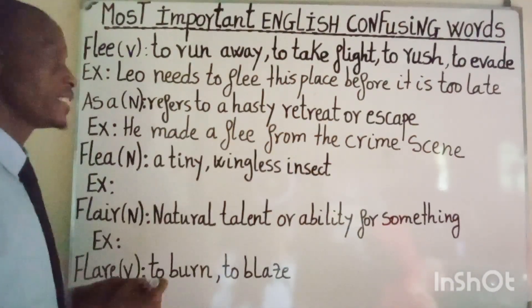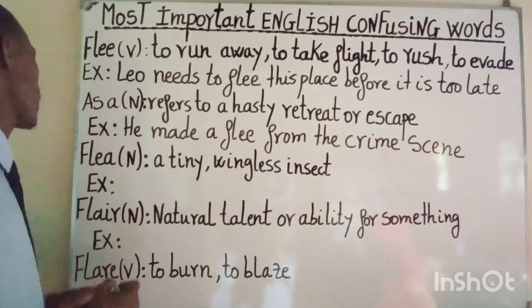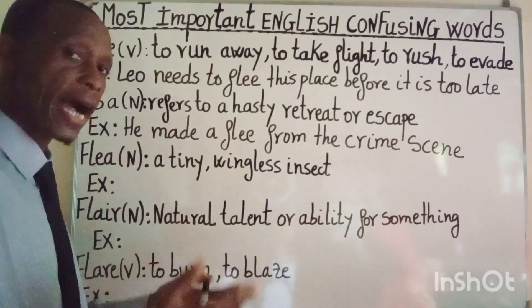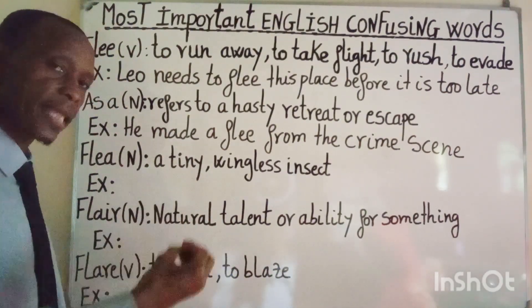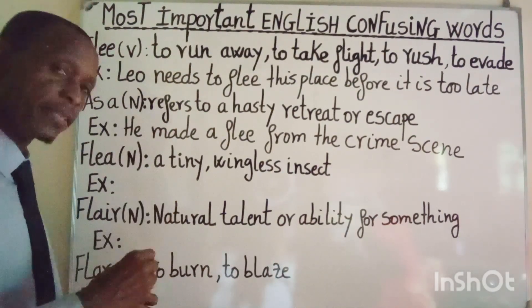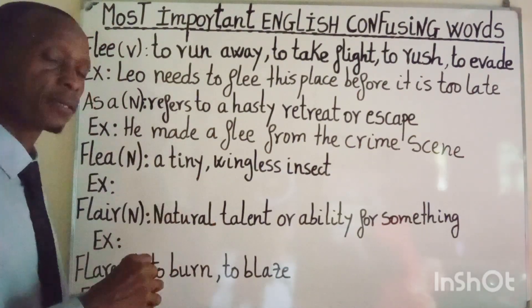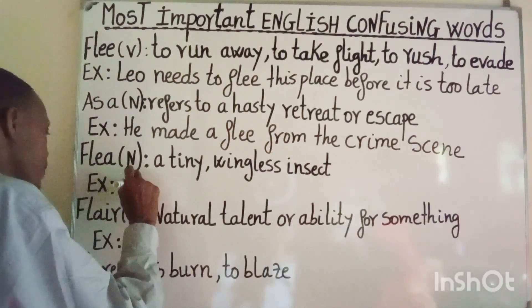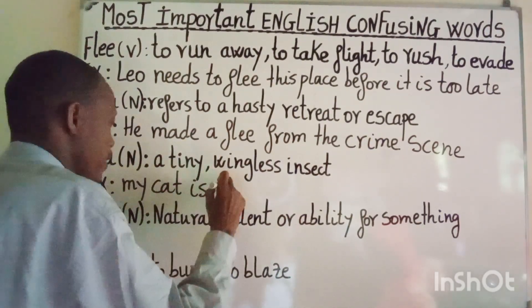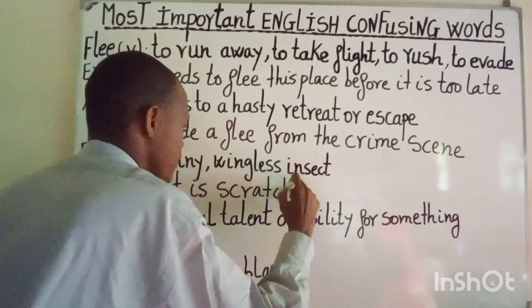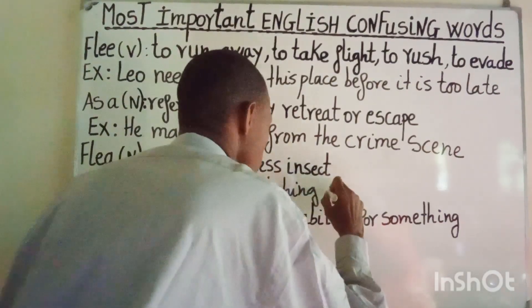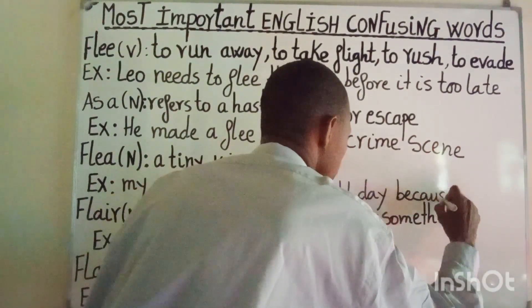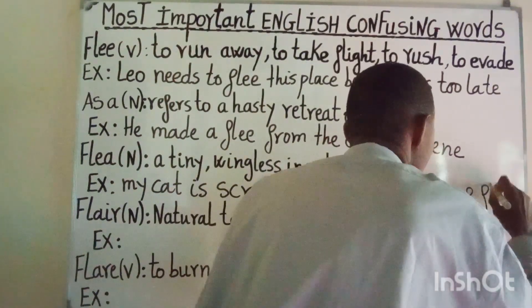On the other hand, when 'flea' is spelled as F-L-E-A, it is always used as a noun, and it means a tiny, wingless insect that feeds on the blood of humans or animals. For example: My cat is scratching all day because of fleas.